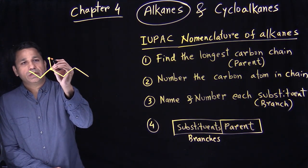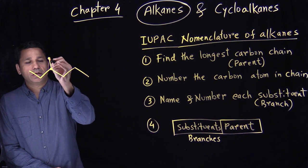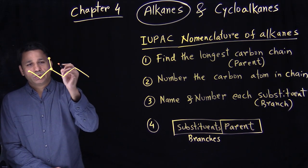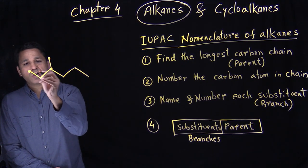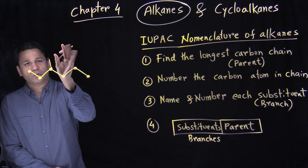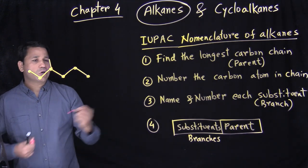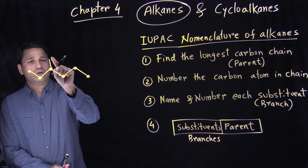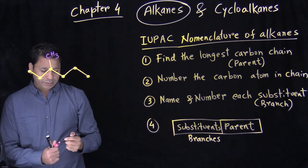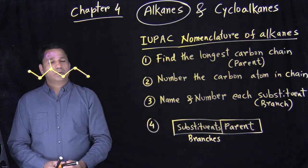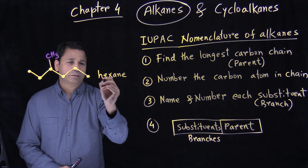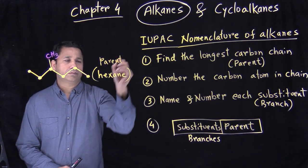How do I find the longest carbon chain? You look at each and every possible path and find the longest one. Starting from one end I get five carbons; starting from the other end I get six carbons. Six is the larger chain, so I found my longest carbon chain. Once I find the longest carbon chain, what comes out of it becomes your branch — here that's one carbon, a CH3.